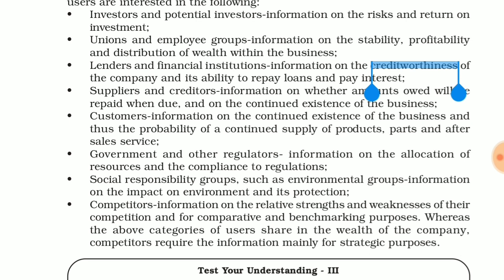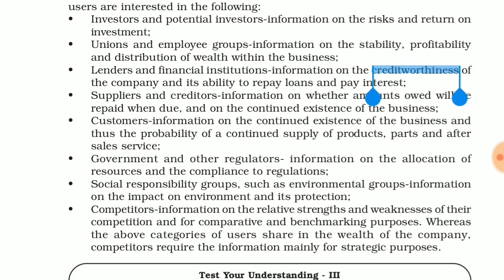Suppliers and creditors — information on whether amounts owed will be repaid when due. The suppliers and creditors who are supplying raw materials are definitely owed money. They also supply on credit, so whether the money will come back is important for creditors. That is why they also need accounting information.